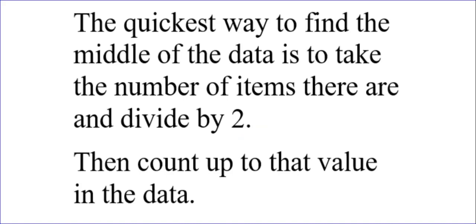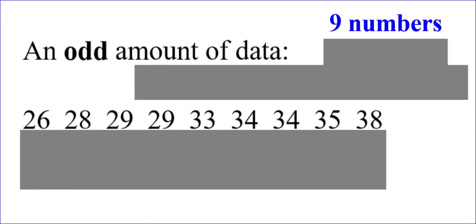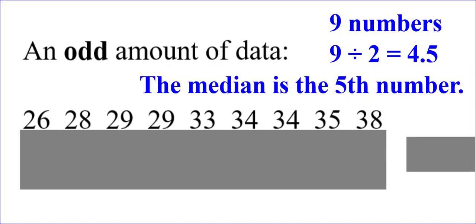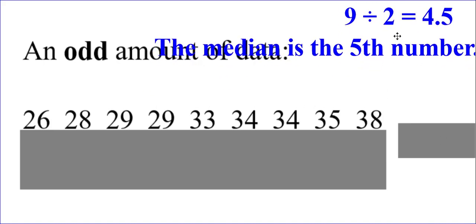So the quickest way to find the middle of the data is to take the number of items there are and divide by two. Then we'll count up to that value in the data. Let me show you what I mean. Back to the example we were looking at with nine numbers. Nine divided by two is 4.5. If you didn't know that, you could use a calculator. Now, there is no such thing as a 4.5 number. There's a fourth number, there's a fifth number. So whenever you divide by two and you get something point five, you're going to round up, and that means the median will be the fifth number.